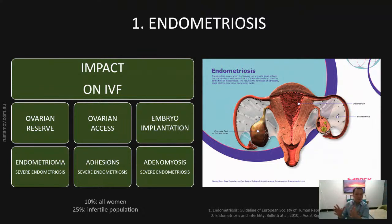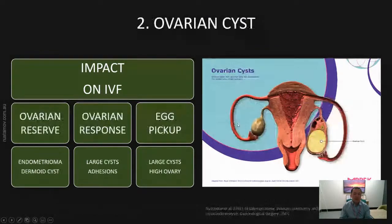We may not be able to see ovaries on ultrasound scan clearly, and we may not be able to access ovaries when we do a pickup. The third impact of endometriosis is on implantation — severe endometriosis and also adenomyosis may impact implantation significantly. Adenomyosis is where the endometriotic lesion is located inside the uterine wall, which can cause localized inflammation and reduction in implantation.